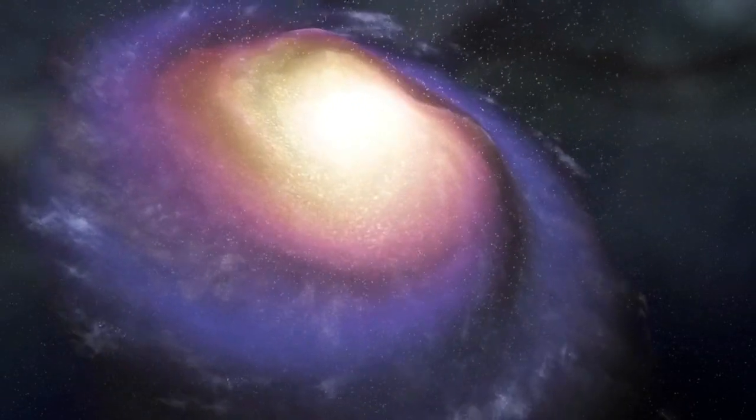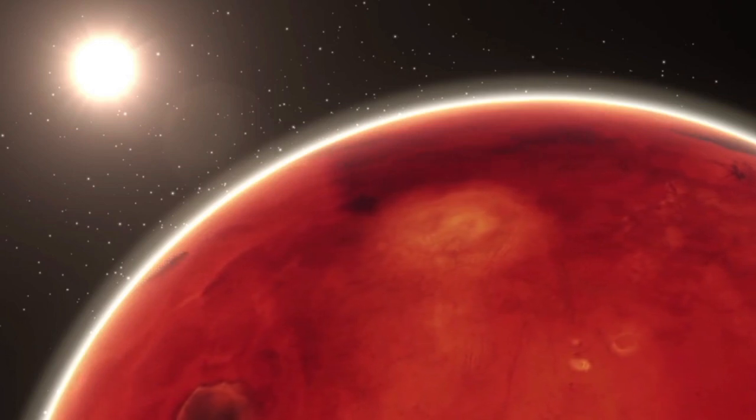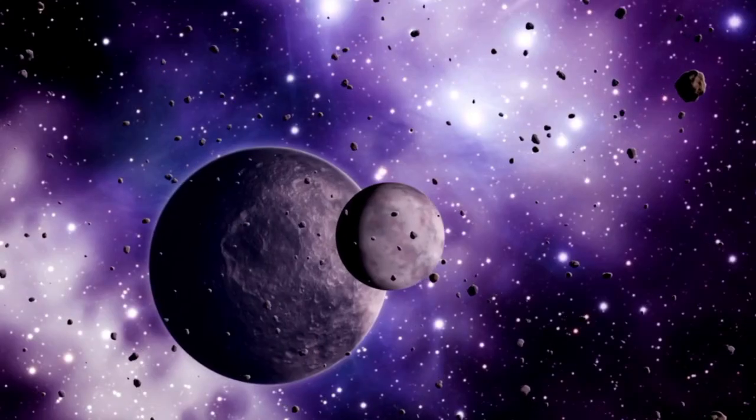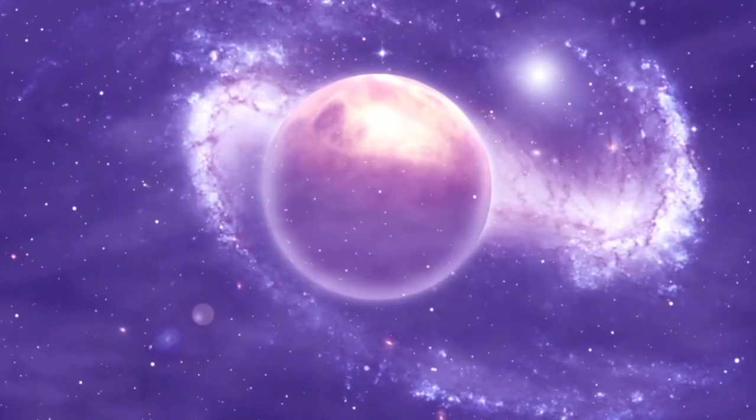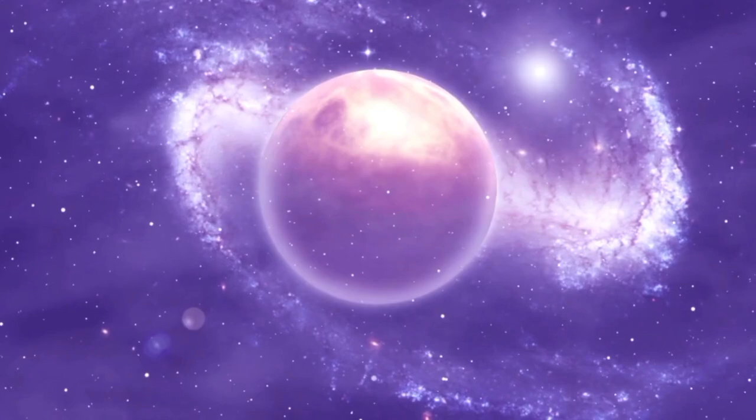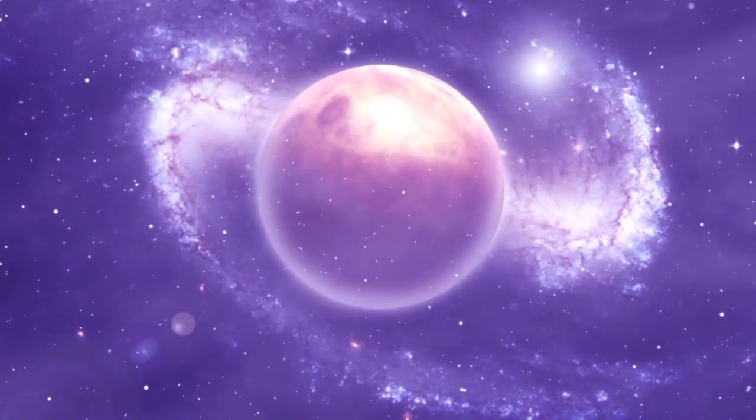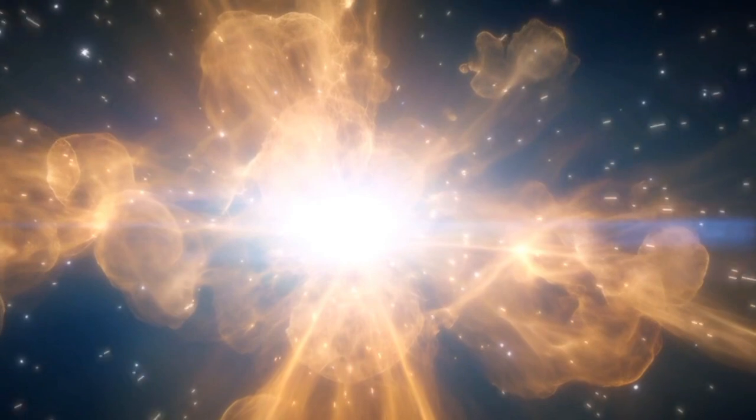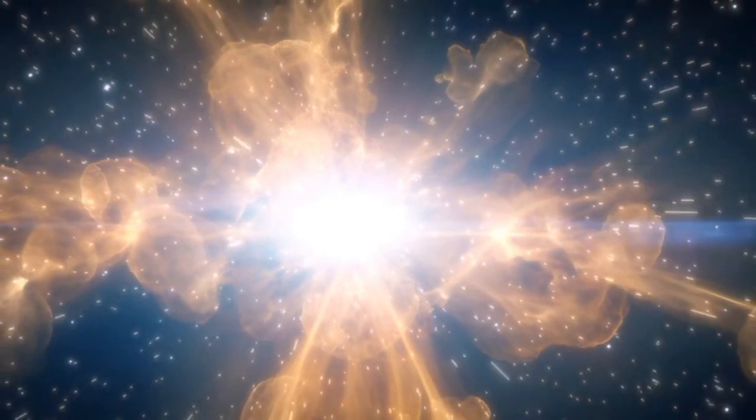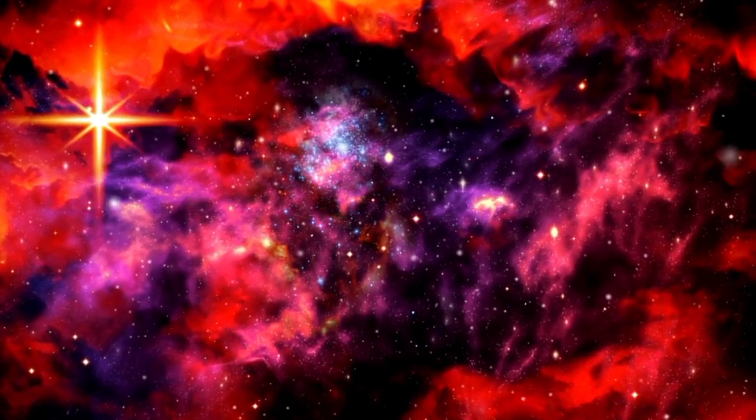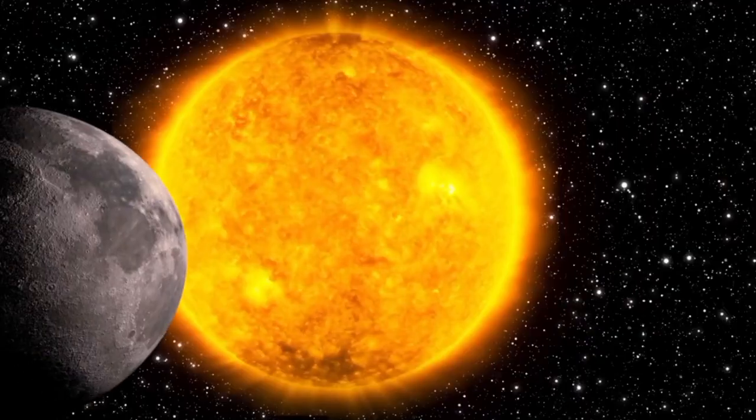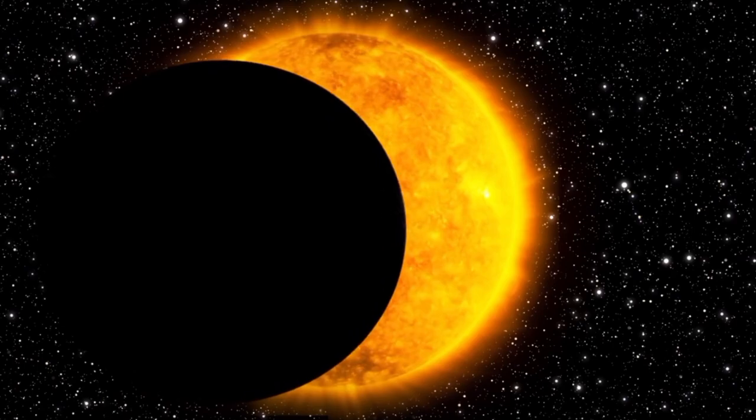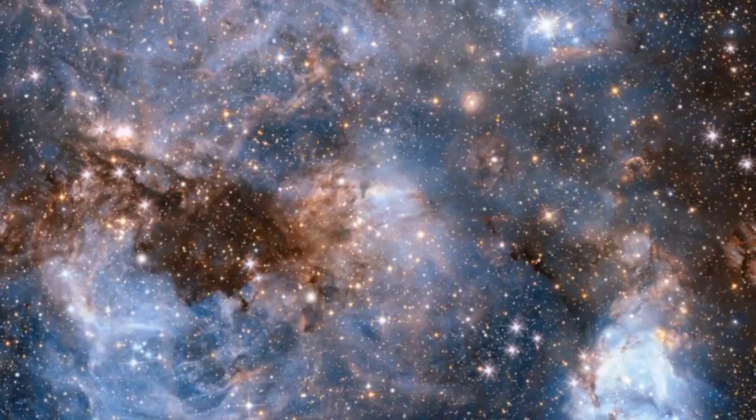The supernova could also help refine current models of how elements are distributed throughout the universe. When massive stars like Betelgeuse explode, they scatter elements into space, enriching the interstellar medium with the building blocks necessary for life. This process, known as cosmic evolution, plays a crucial role in the formation of new stars, planets, and other celestial bodies. By studying the aftermath of Betelgeuse's explosion, cosmologists will be able to model the distribution of these elements across the universe and gain a better understanding of the recycling of matter that drives cosmic development.